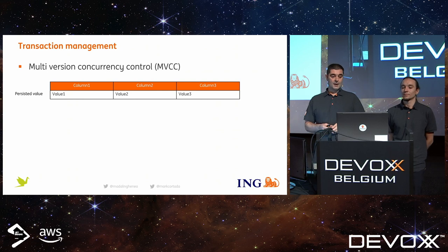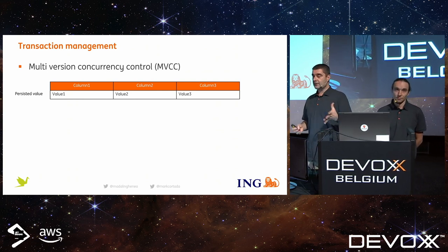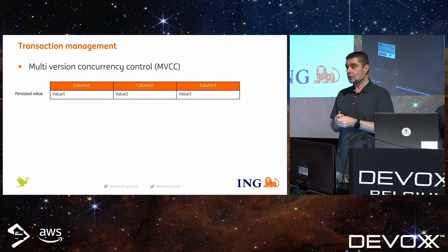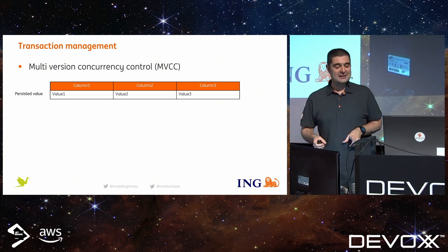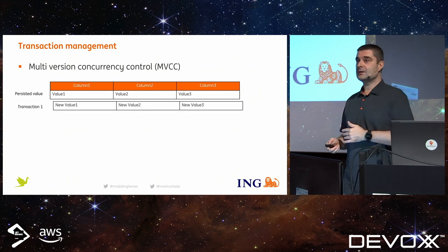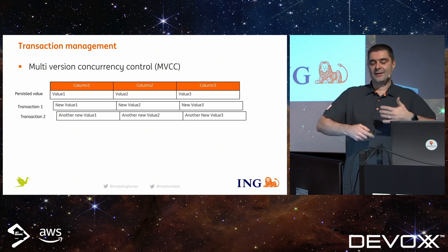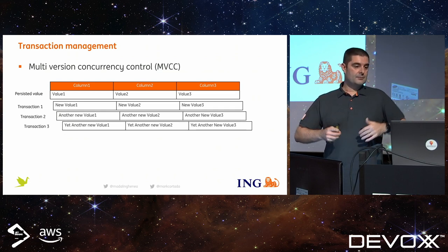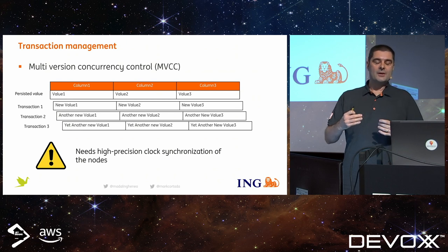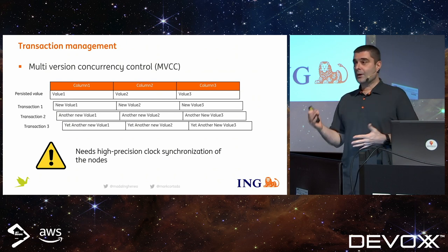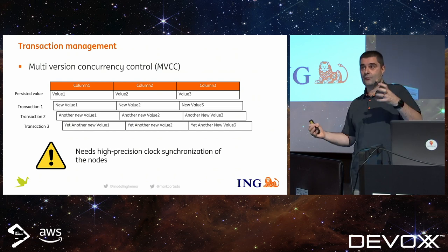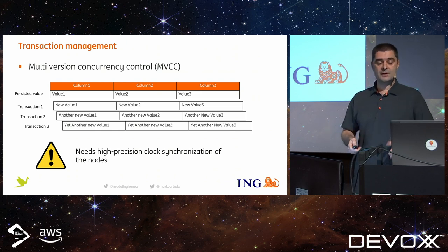Another key difference between NuoDB and VoltDB is transaction management. NuoDB implements Multi-Version Concurrency Control (MVCC) — don't confuse it with Model-View-Controller. MVCC works by storing multiple versions of a value when concurrent transactions occur. If there is a conflict, the winning transaction is decided based on the timestamp. This also requires high-precision clock synchronization across nodes, because in the case of a conflict, you need to determine the valid value for the transaction.